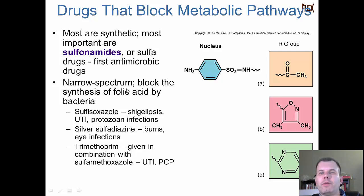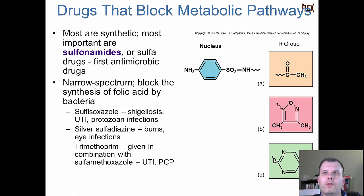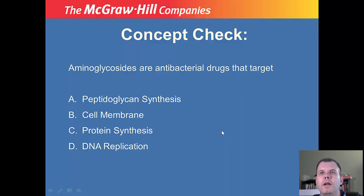Here are a number of different sulfonamides. Some are narrow spectrum for the folic acid pathway. The differences between them are based on the R groups - that's what makes those drugs different. A lot of times we refer to these as the 'sulfa drugs.' So if you hear 'sulfa drug,' it's blocking the metabolic pathway to folic acid.